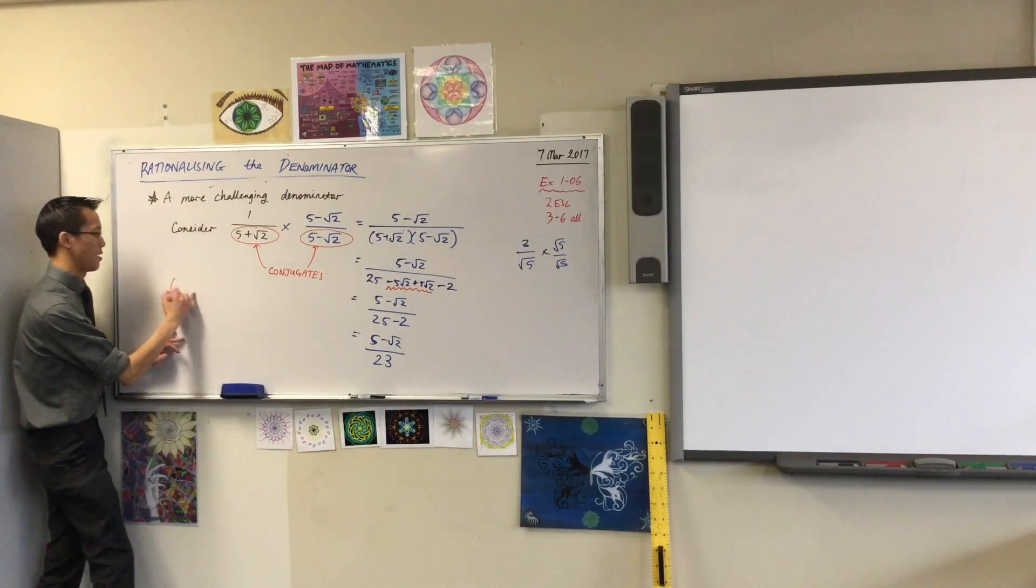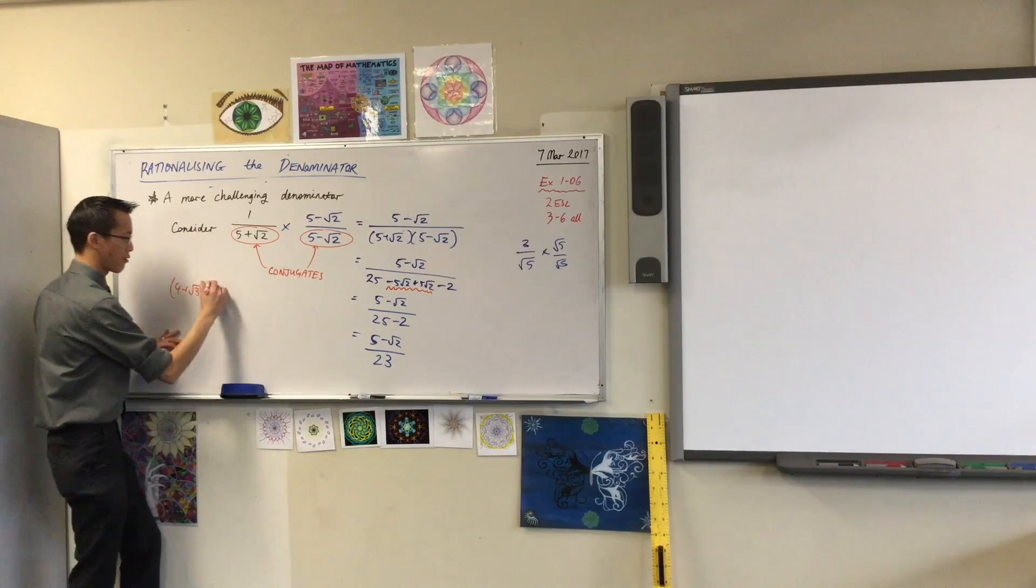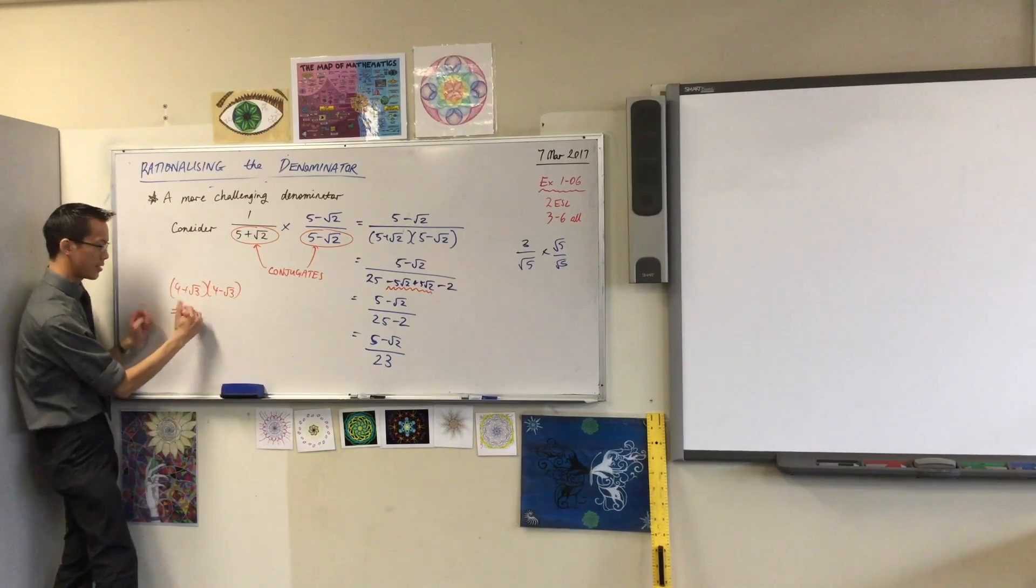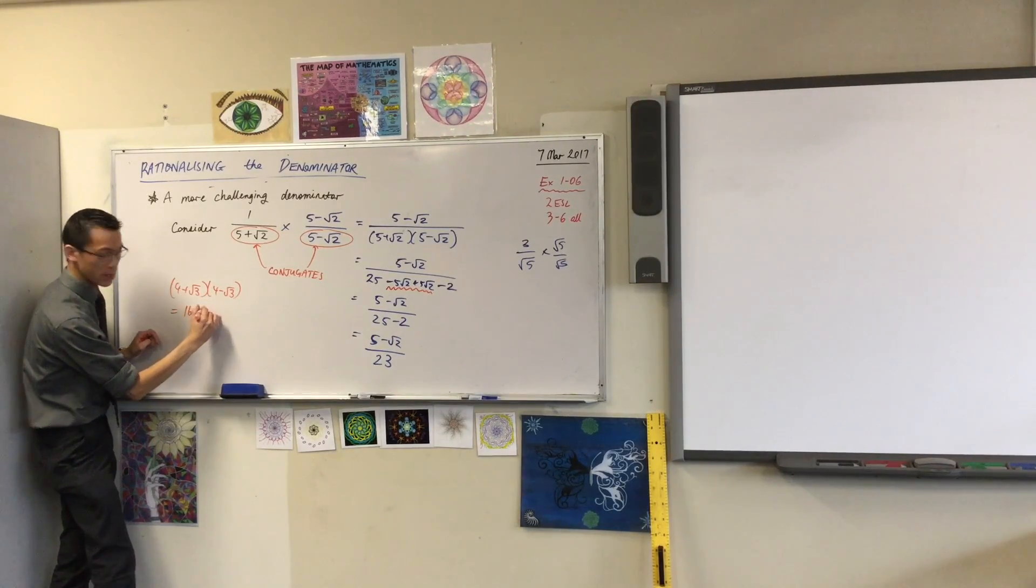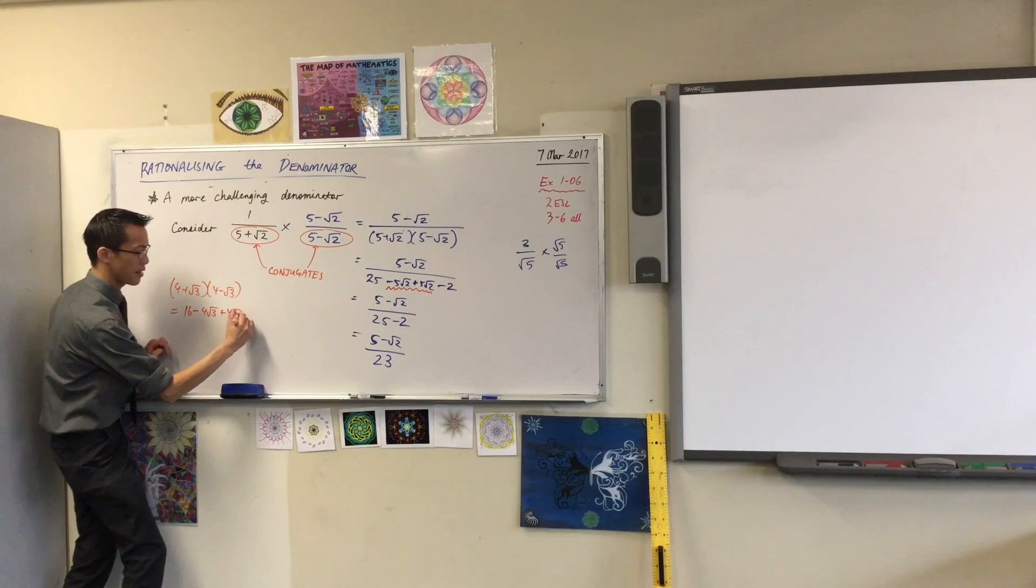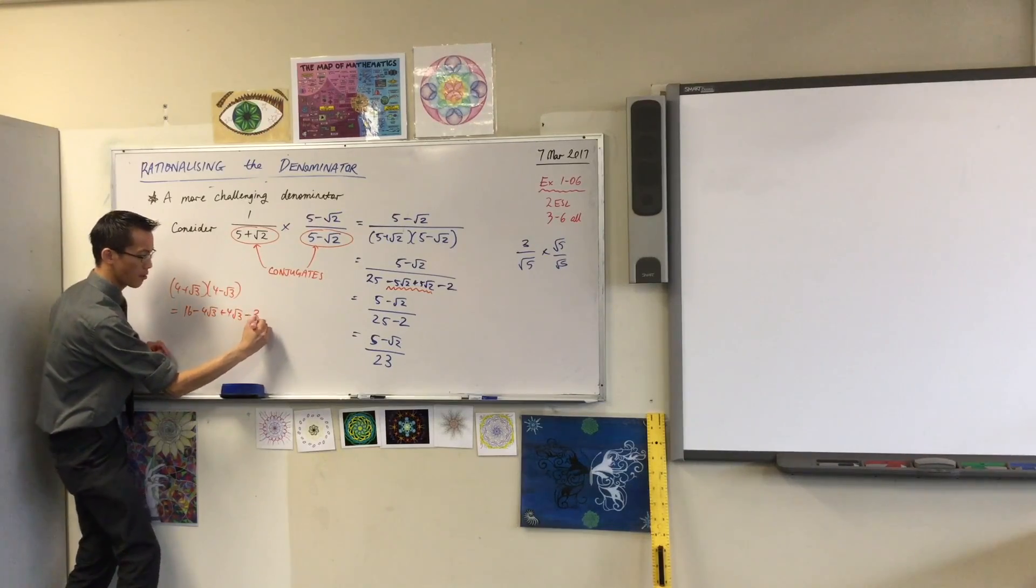Let's just make one up here. 4 plus root 3. What would the conjugate of this guy be? 4 minus root 3. Now watch. Let's just do the expansion, right? You're going to get 16 minus 4 root 3 plus 4 root 3. Watch out for the signs. Minus 3. Do you agree?